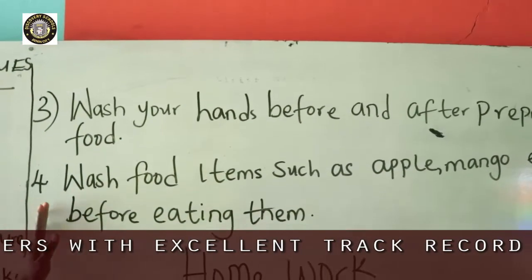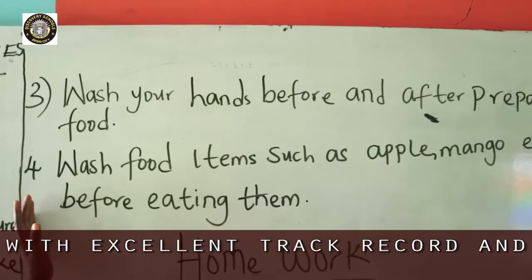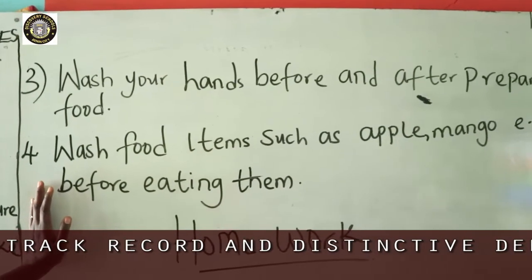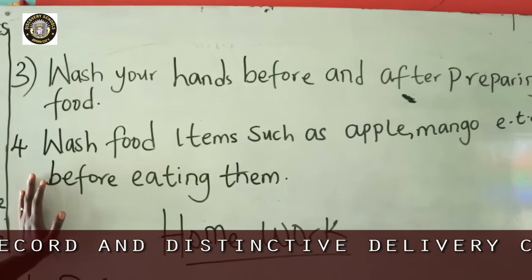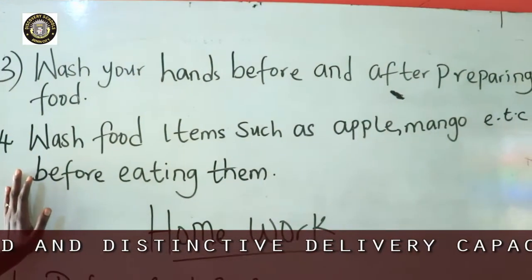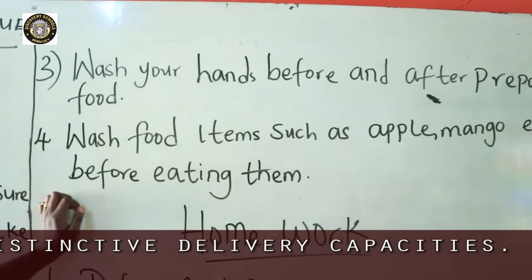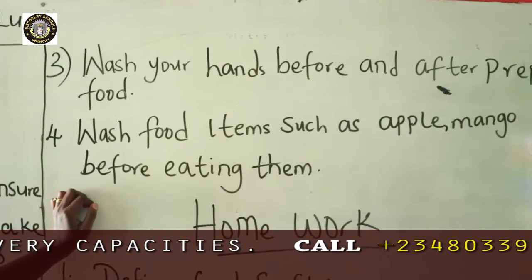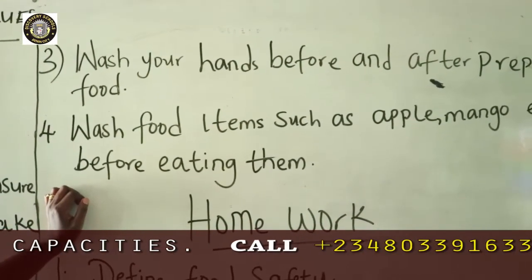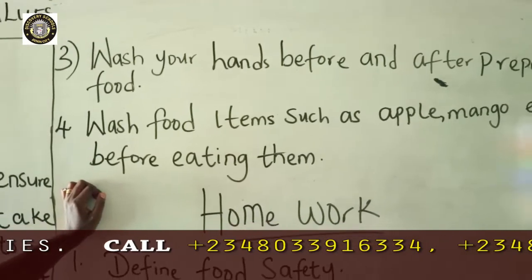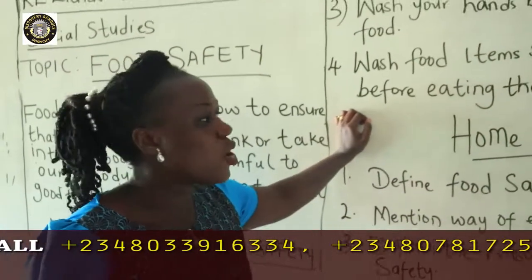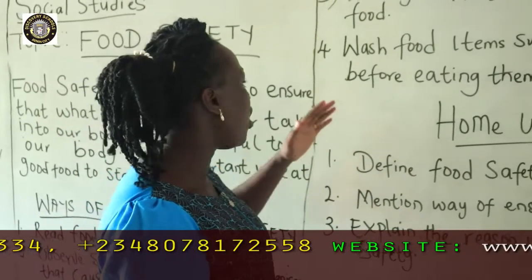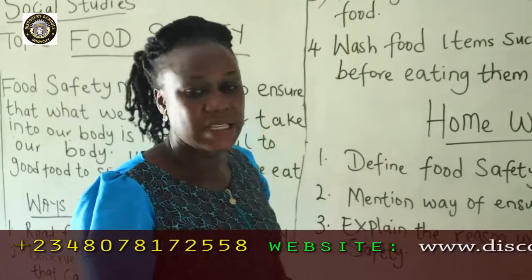Number four, which is our last point: you must wash your food items before eating them. Food items such as apple, mango — before eating them. Your vegetables, before they will be cooked, you have to wash them. Wash before you use. So, these are the ways in which we can ensure food safety.